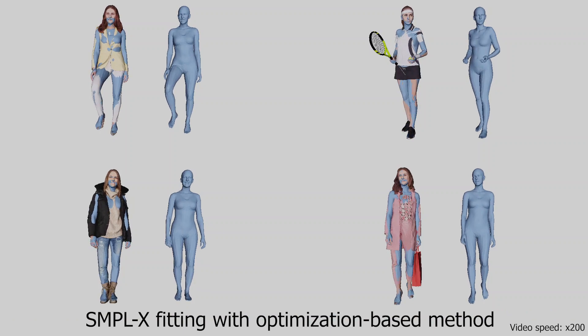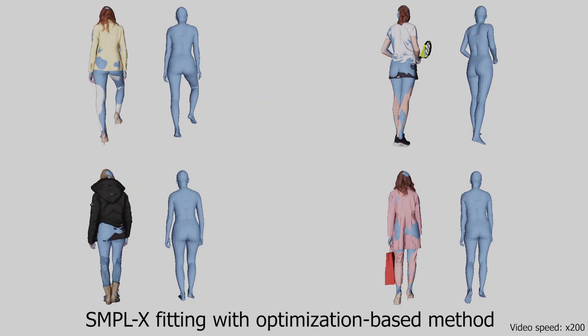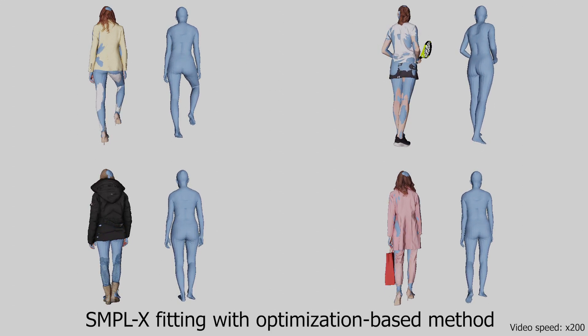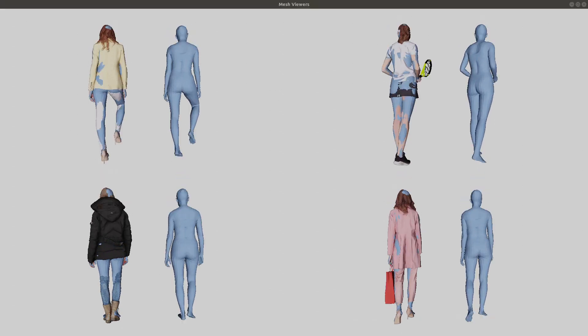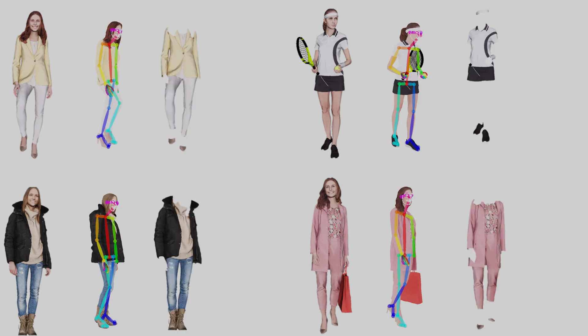To each scan we precisely fit a SMPL-X body model to provide ground truth 3D body pose, hand pose, and facial expressions. Given multiple scans of the same person, our method considers semantic, geometric, and subject identity information to estimate their SMPL-X parameters.